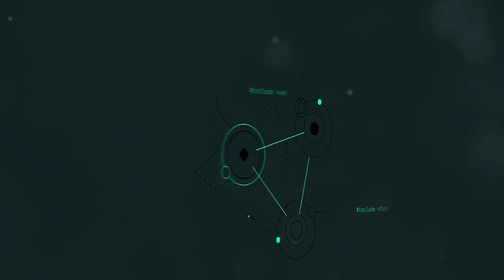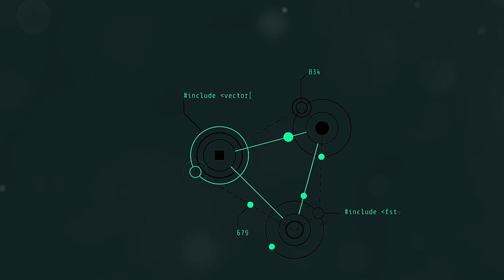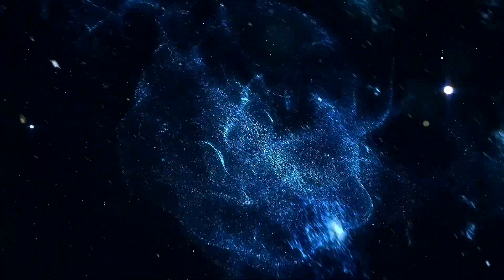Another contender is loop quantum gravity, which builds on quantum theory's canonical quantization procedures. This model employs Ashtekar variables and envisions space as a spin network, evolving in discrete steps over time.